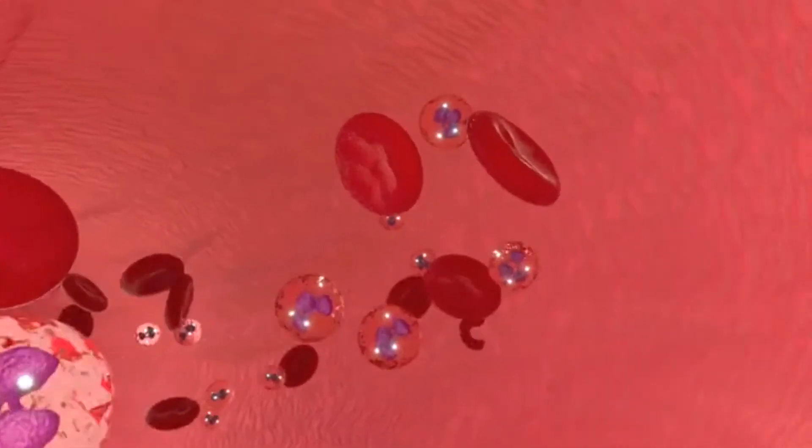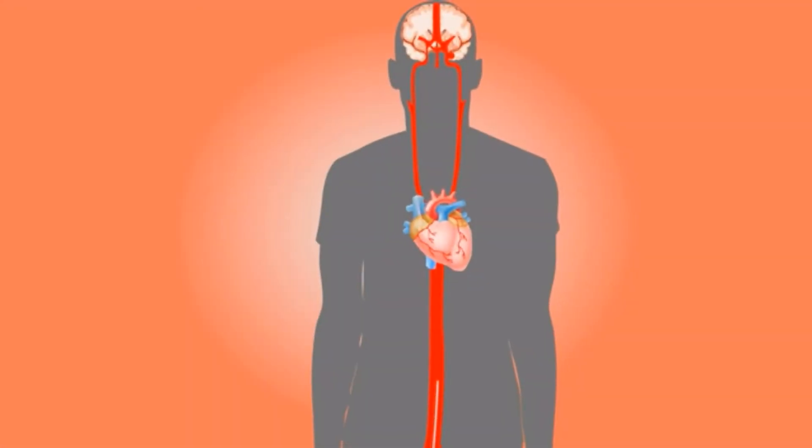Blood has the following functions. It carries oxygen and nutrients to all the cells in the body. It takes away waste from the cells. It transports substances that control many of our body functions. It helps to regulate our body temperature. It helps to fight infections.